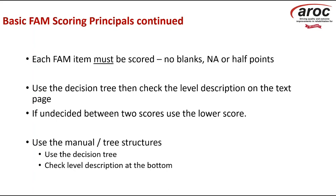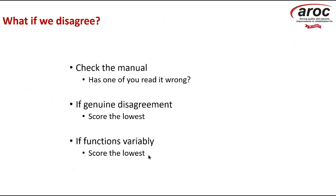The actual text page is at the bottom of the FAM manual under the decision tree, rather than on the opposite page like the FIRM manual. If you disagree about what the score is, check the manual to make sure you understand what the item is actually looking for and what the individual scores relate to within that item. If there's genuine disagreement, go to the lower score. If the function is variable — the same as the FIRM — you score the lowest ability, the one requiring the most input.